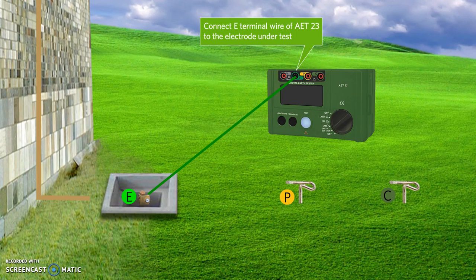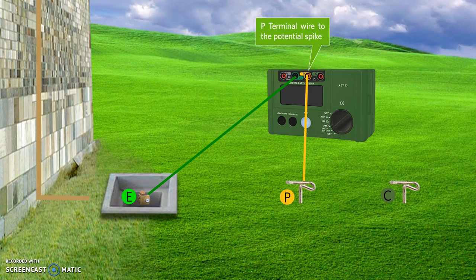Connect the E wire of the tester to the earth electrode under test. Connect the P terminal to the potential spike and C terminal to the current spike.